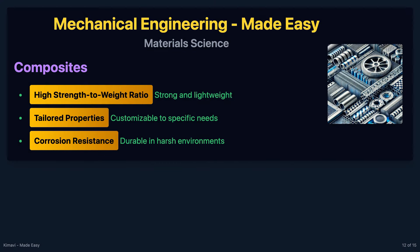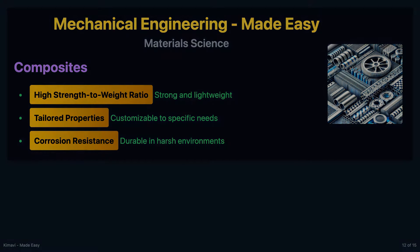Composites are materials made from two or more constituent materials with significantly different physical or chemical properties. The constituents remain separate and distinct within the finished structure. Composites can be designed to be stronger and lighter than traditional materials, have tailored properties to meet specific requirements, and are resistant to corrosion.